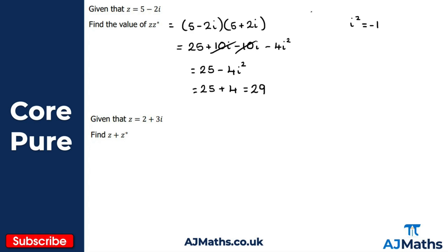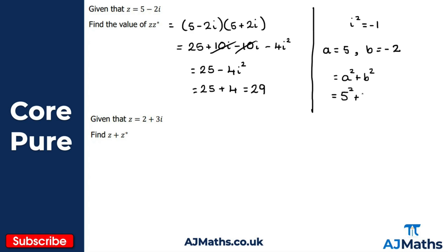Using the quicker method: with a equal to five and b equal to minus two, z times z* equals a squared plus b squared. So five squared plus minus two squared equals 25 plus four, giving us 29 — the same answer.